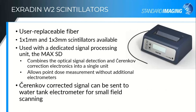The second generation device is called the W2. It has multiple fibers and is used with a dedicated optics and electronic system called the MaxSD. We provide the system with both a one by one millimeter scintillator and a one by three. For extremely small fields, everyone wants the one by one because it's a uniform size — you don't have to worry about volume averaging over the three millimeter length, and you can use it in any orientation. The one by three, however, gives you a direct connection to all of the W1 publications that came before because the fiber is identical — the same geometry, same size, same everything.